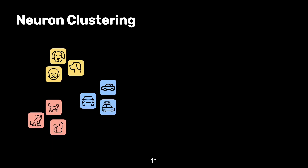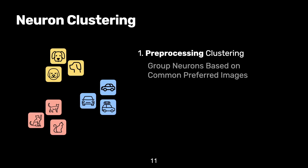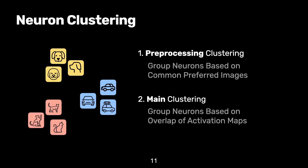Our neuron clustering approach has two phases. First, in the pre-processing stage, we cluster neurons quickly and efficiently without looking at neuron activation maps in detail. Next, in the main clustering stage, we further divide the pre-processed neuron groups based on the degree of overlap in the neuron activation maps.